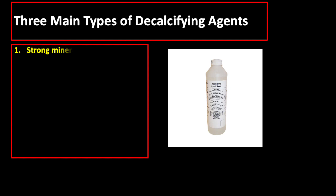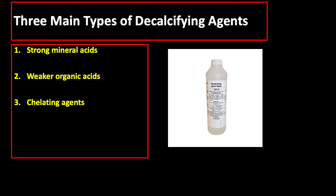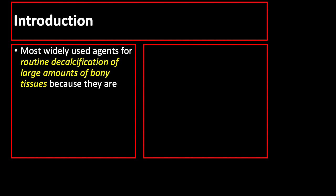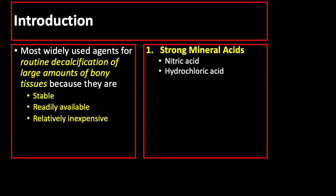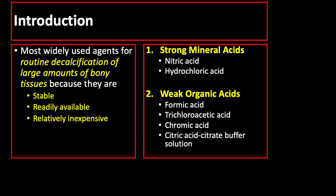The next step after adequate fixation is decalcification proper. There are three main types of decalcifying agents: those based on strong mineral acids, those based on weaker organic acids, and those composed of chelating agents. Acid decalcifying agents are the most widely used agents for routine decalcification of large amounts of bony tissues because they are stable, readily available, and relatively inexpensive. They are either strong mineral acids such as nitric acid and hydrochloric acid, or weak organic acids such as formic acid, trichloroacetic acid, chromic acid, and citric acid citrate buffer solution.